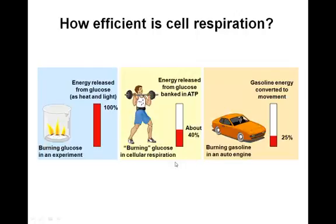Right in between those two is the energy released from glucose banked in ATP. Burning glucose as part of cellular respiration — the breakdown of glucose combining with oxygen to release CO2, H2O, and ATP — is about 40% efficient.